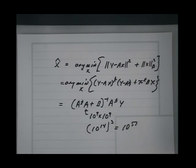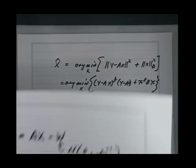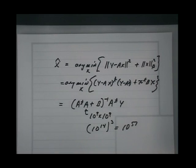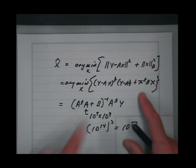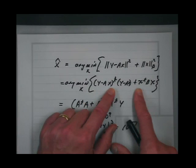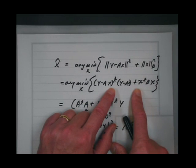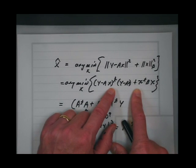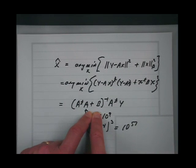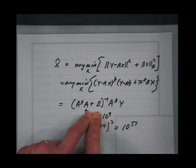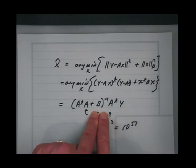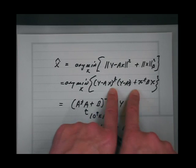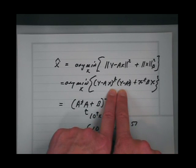What we're going to do is forget the closed-form solution and start all over again. We're going to solve this optimization problem numerically — not try to solve it in closed form, even though it has a closed-form solution. It's a lot easier to just do the optimization problem numerically.